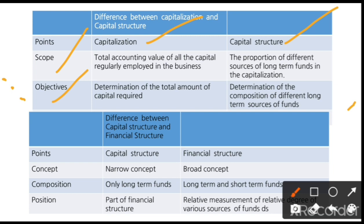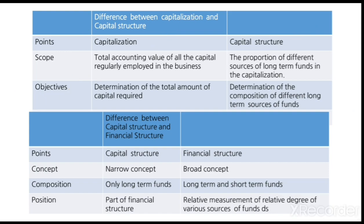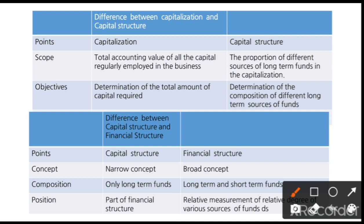The sources for collecting that one crore rupees could be banks, equity shares, preference shares, or debentures — and this collection method is what is known as Capital Structure. Now let us also understand the difference between Capital Structure and Financial Structure. Capital Structure is a narrow concept — it gives a clear and straightforward picture about the capitalization of the company.